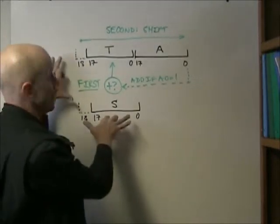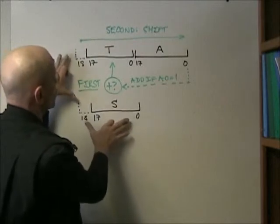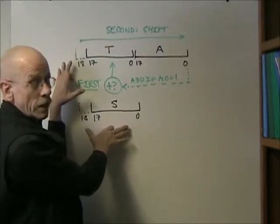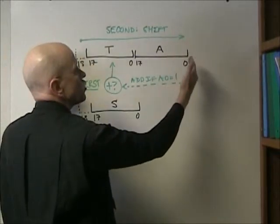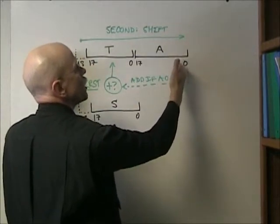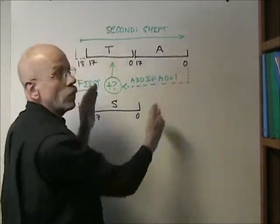The add, if it is done, simply adds the sign-extended 19-bit S to the sign-extended 19-bit T, and then, in the second part of the instruction, the entire 37-bit register is shifted right one bit.